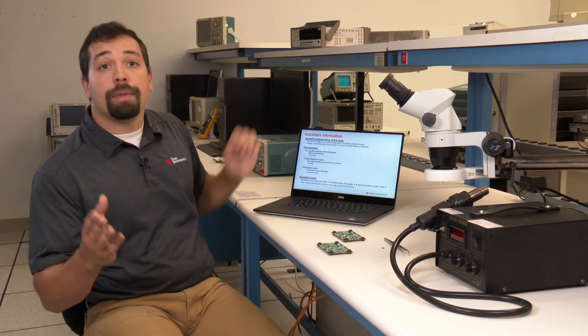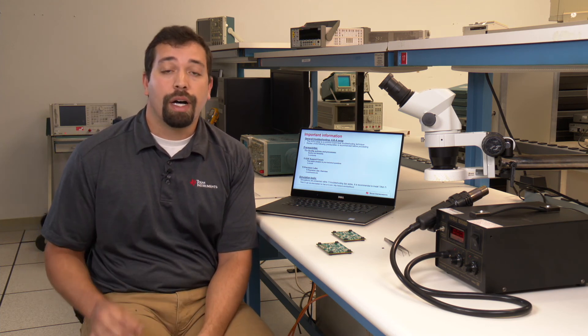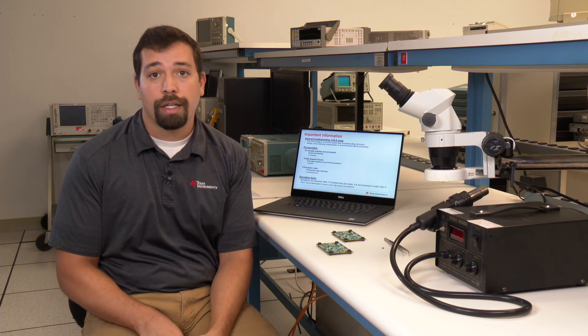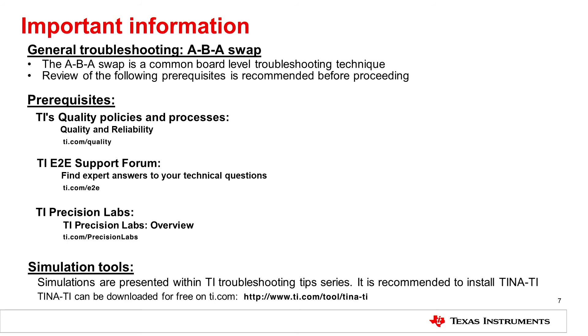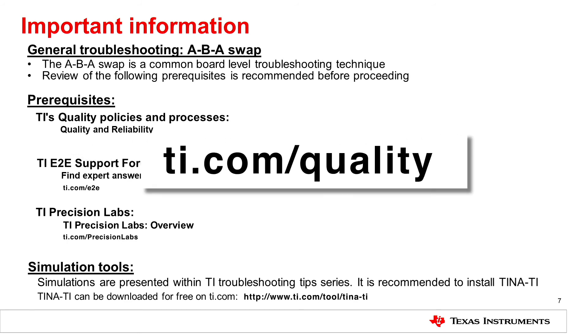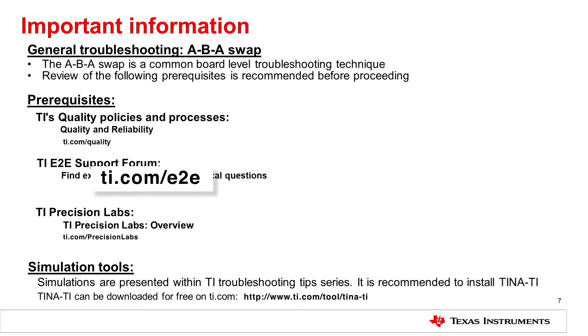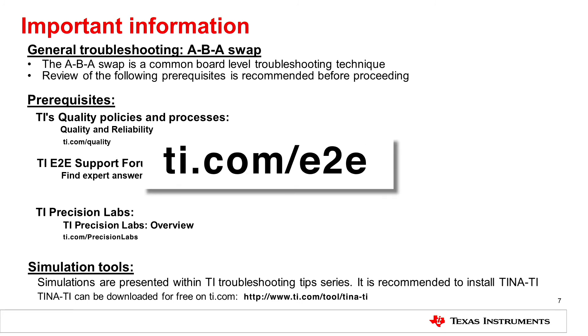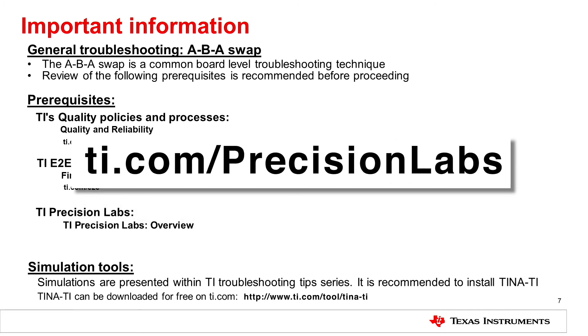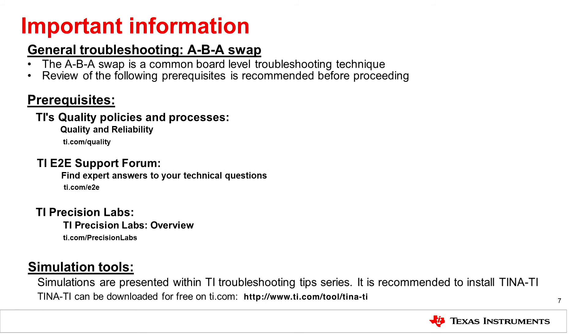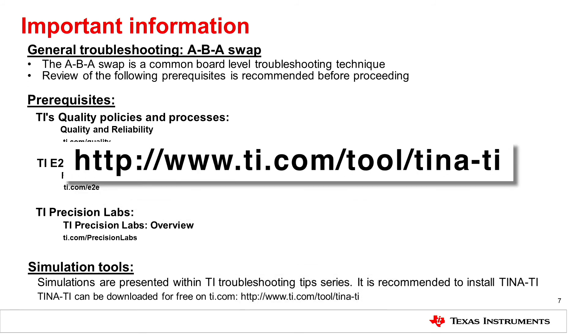Now that we've covered the ABA swap process, it is important to mention that TI has additional collateral on TI.com to help with troubleshooting and debugging. As shown here in the slide, TI has various quality policies and processes, as well as an E2E support forum and TI Precision Labs. Lastly, TI provides free software for download such as TINA-TI for simulations.